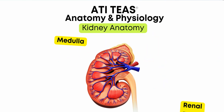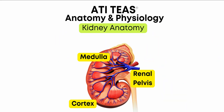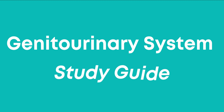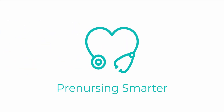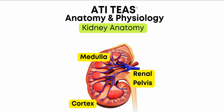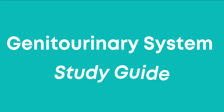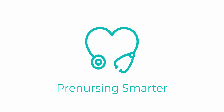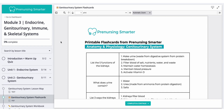Hey, it's Kate from Pre-Nursing Smarter. I hope you're having an awesome day today. In this video, we're going to go over the genital urinary system, talk about the functions of the kidneys, go over some basic kidney anatomy, and then do an outline of the main study points for this TEAS body system. This was a request from YouTube comments, so if there are other things you'd like to see, please let me know and I'll do my best to make a video.